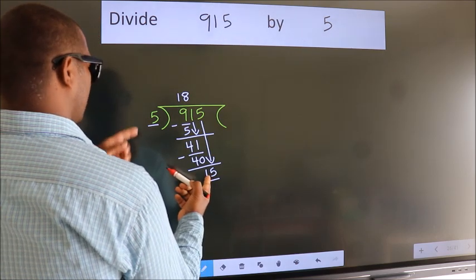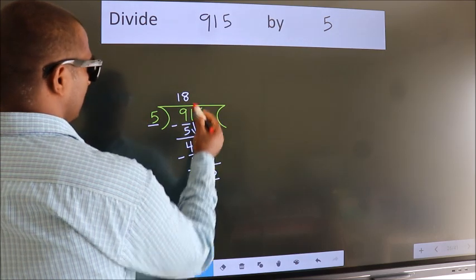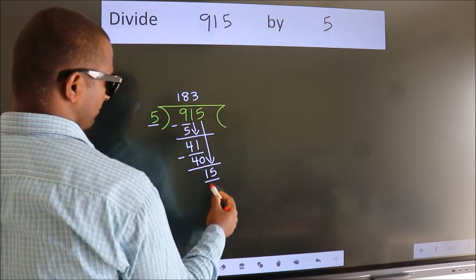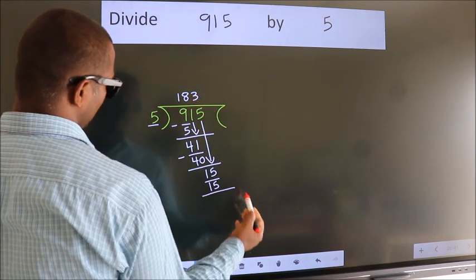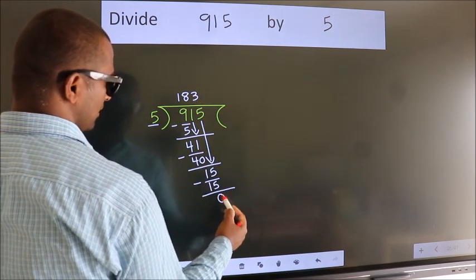When do we get 15 in the 5 table? 5 times 3 is 15. Now we subtract. We get 0.